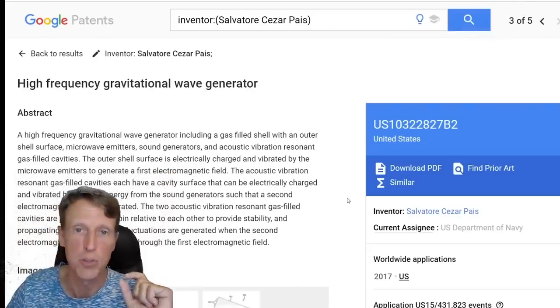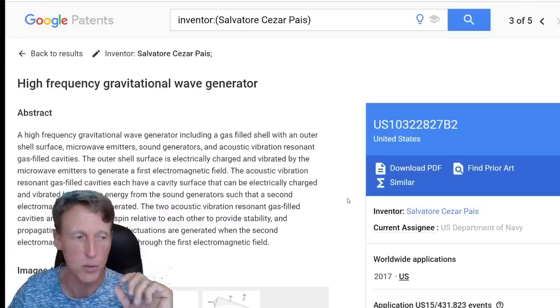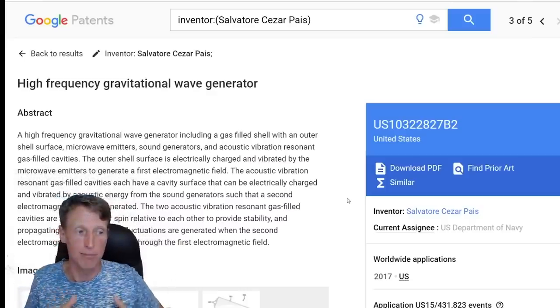The Pais effect would be making this thing weigh nothing. It would weigh nothing. If something weighs nothing, what they said is you can hit it with another pulse using that same system - you just change the way that thing spins. Now since it weighs nothing you can just send it at light speed. It goes light speed. If it weighs nothing really, it doesn't take much force to move it.